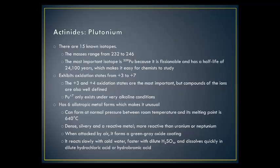Plutonium has 15 known isotopes with masses ranging from 232 to 246. The most important isotope is ²³⁹Pu because it is fissionable and has a half-life of 24,100 years. It exhibits oxidation states from plus-3 to plus-7; the plus-3 and plus-4 states are the most important, while Pu⁷⁺ only exists under very alkaline conditions. It has six allotropic metal forms that can form at normal pressure between room temperature and its melting point of 640°C. It is dense, silvery, and more reactive than uranium or neptunium; when attacked by air it forms a green-gray oxide coating. It reacts slowly with cold water, faster with dilute H₂SO₄, and dissolves quickly in dilute hydrochloric or hydrobromic acid.